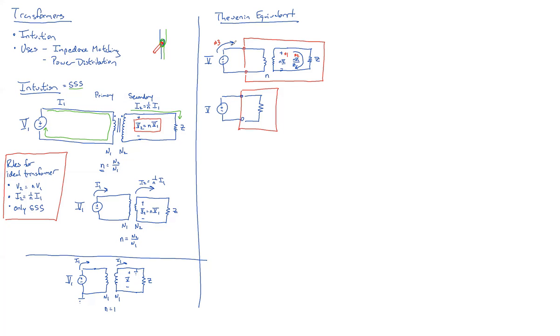So now, that current is going to be N times N V1 over Z. And then, if you want to do V source over I source, you'll have N V1 over N times N V1 over Z. That is beautiful.